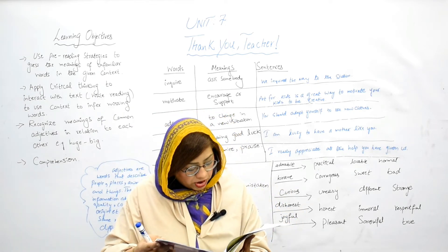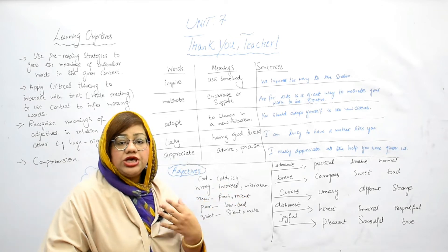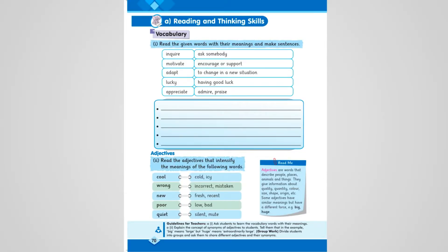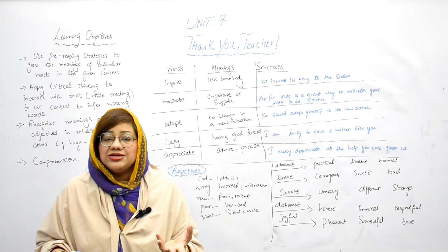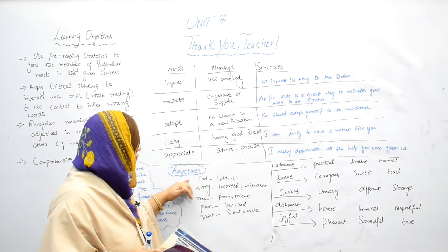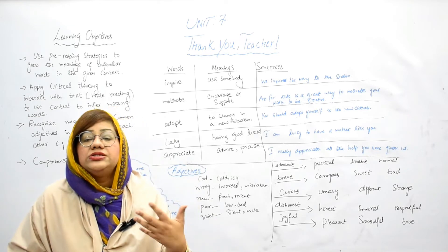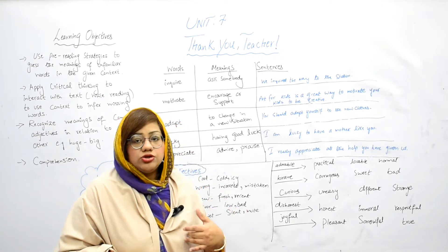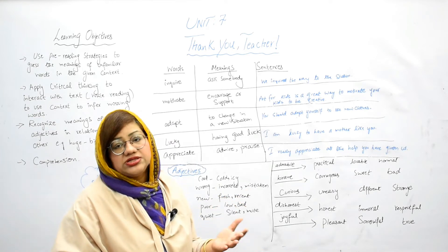On your book page number 70, there are some adjectives along with their meanings to show that some words have similar meanings but different origins. For example, 'cool' — cool means cold, and 'icy' is also cold. So cool and icy are synonyms. 'Wrong' means incorrect, and 'mistaken' also has the meaning of something wrong. These are all adjectives because we are describing something.